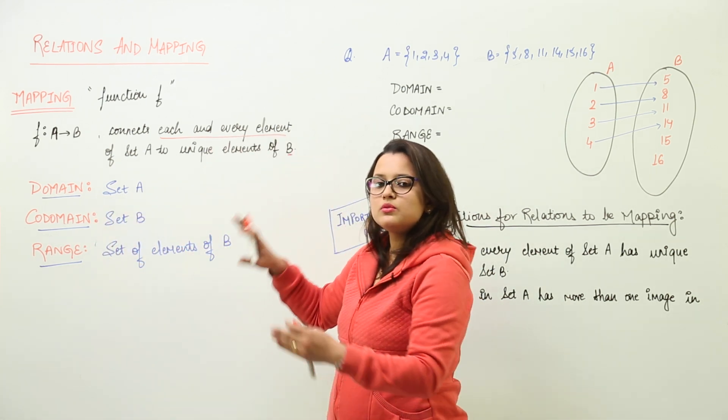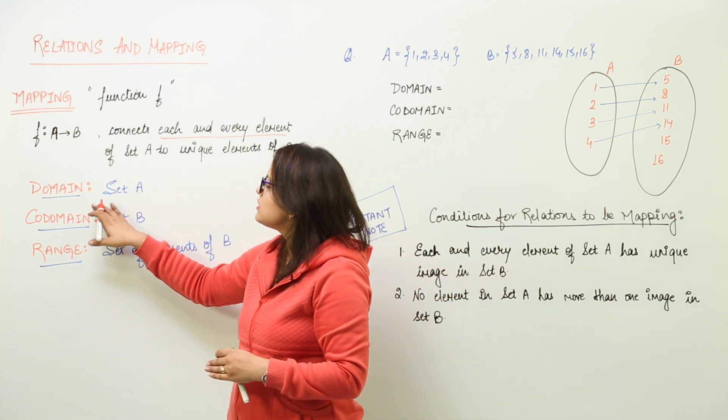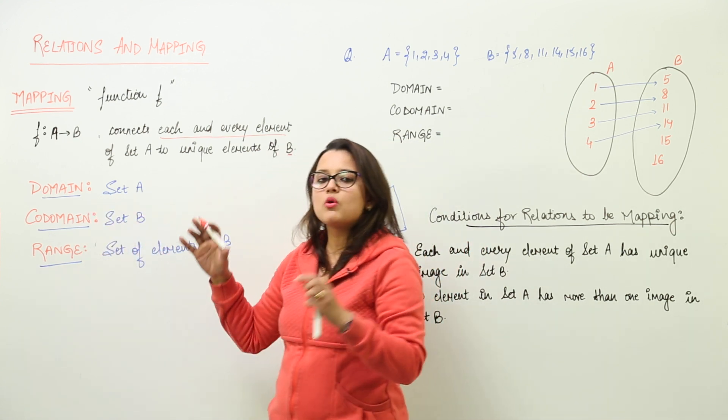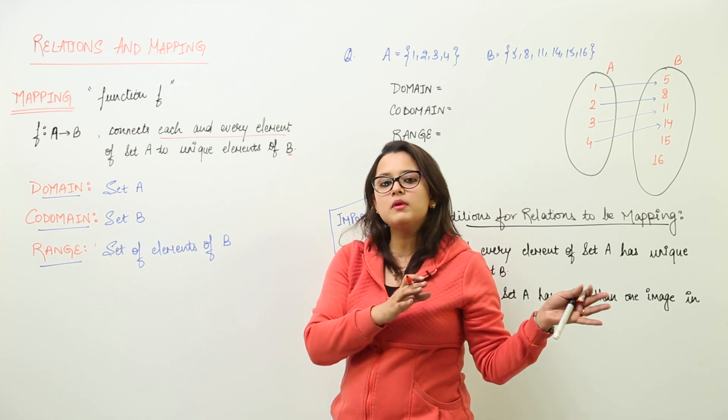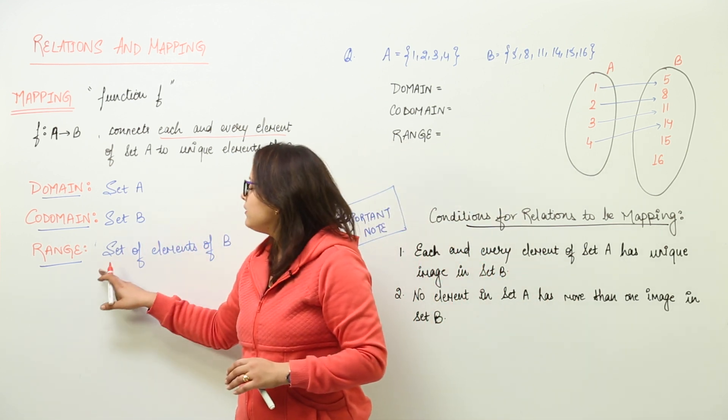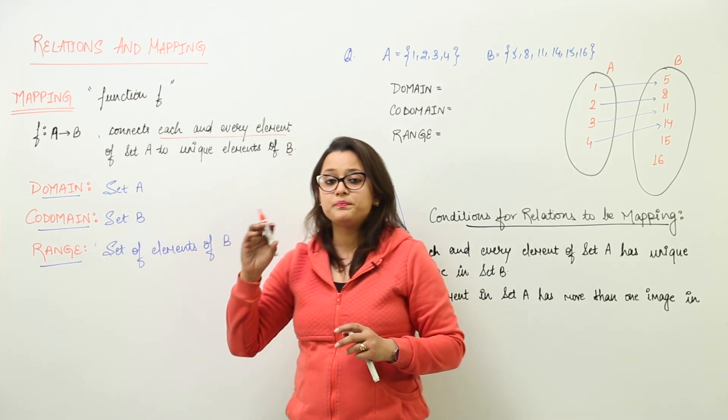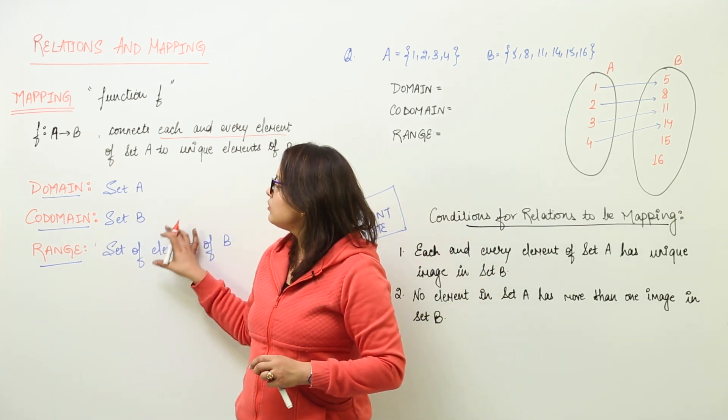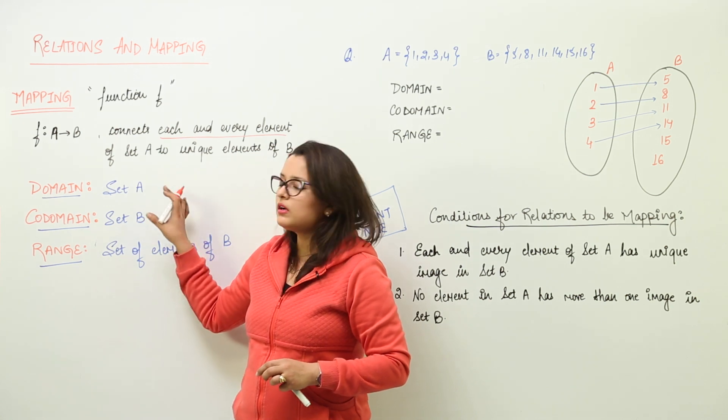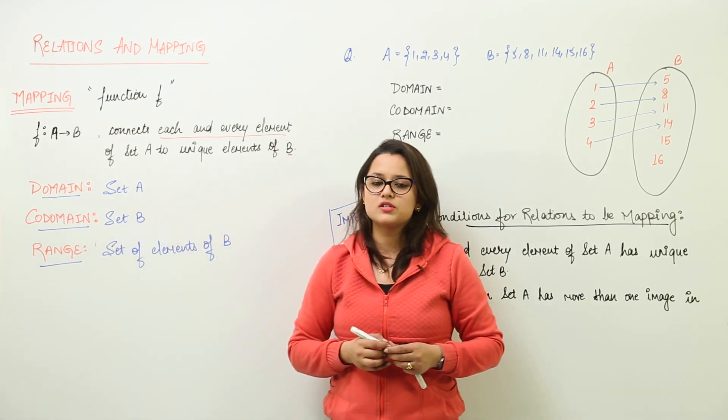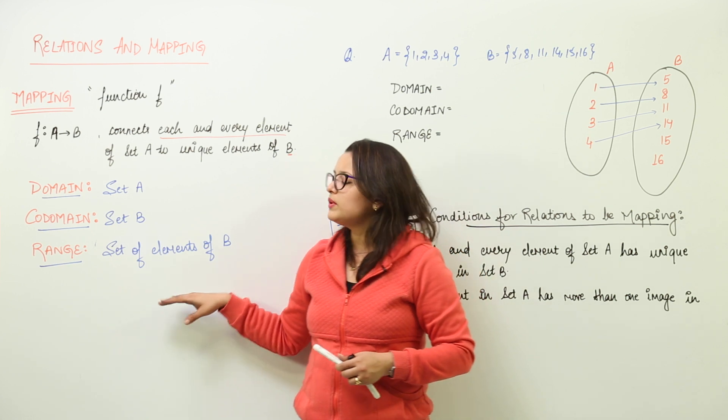Set A is going to be connected to set B. So, set A is the domain. Set B to which all the connections are to be made that is set B and range means set of elements of B. All the elements that are going to be paired or in function with the elements of A form the range.